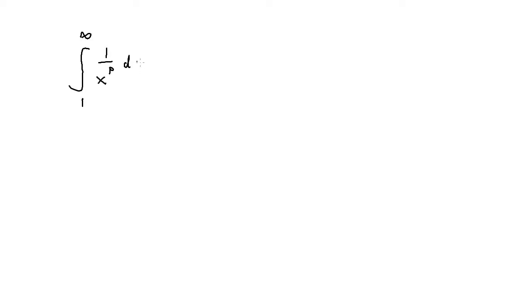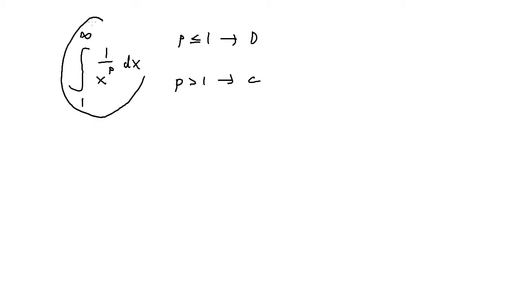Consider the integral from one to infinity of one over x to the power p, dx. If p is less than or equal to one, the integral is divergent. If p is greater than one, the integral is convergent. This rule only applies when the integral is in this exact form — from one to infinity of 1/x^p — and having infinity as a bound confirms it's an improper integral.